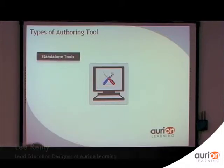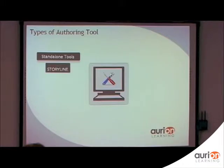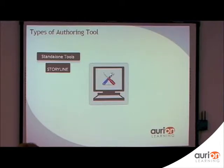We tend to start out with our standalone tools, and these are tools that don't require any other third party or any other extra software to be installed on your machine to be able to use them. The example we're going to use for this is Storyline, which is quite a new entrant into the marketplace — it is the newest version of Articulate Studio, just in case anyone's used it previously, which is one of the most popular ones.